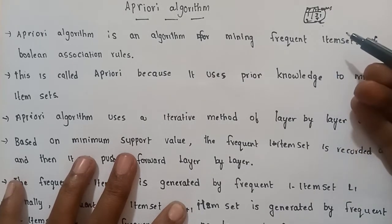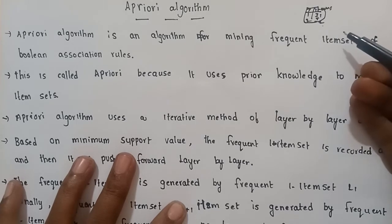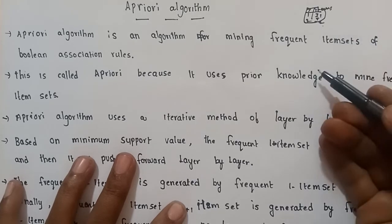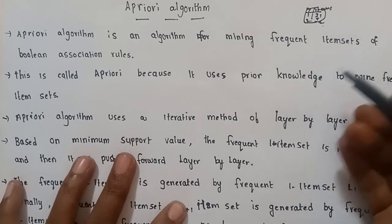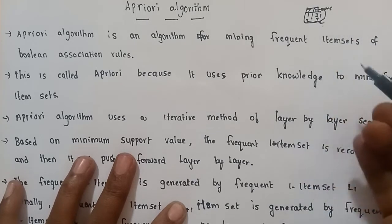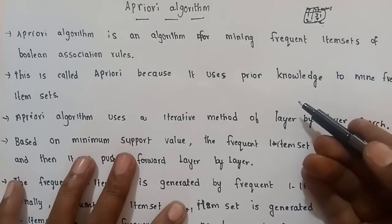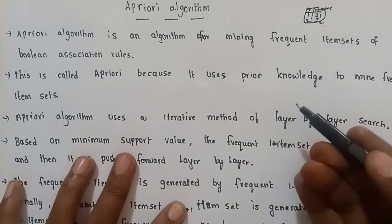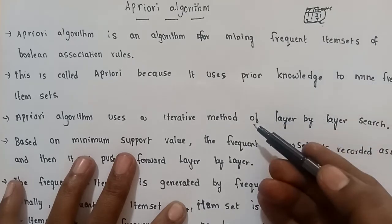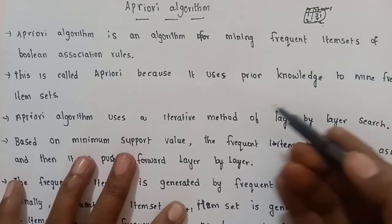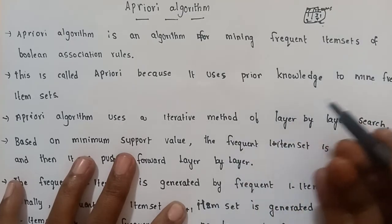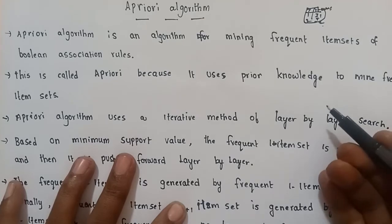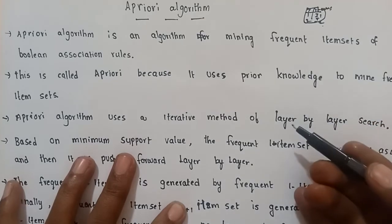In a previous video, we talked about market basket analysis. For example: if milk, then bread. Milk and bread are frequently repeated items. To identify such types of items, we use the Apriori algorithm.